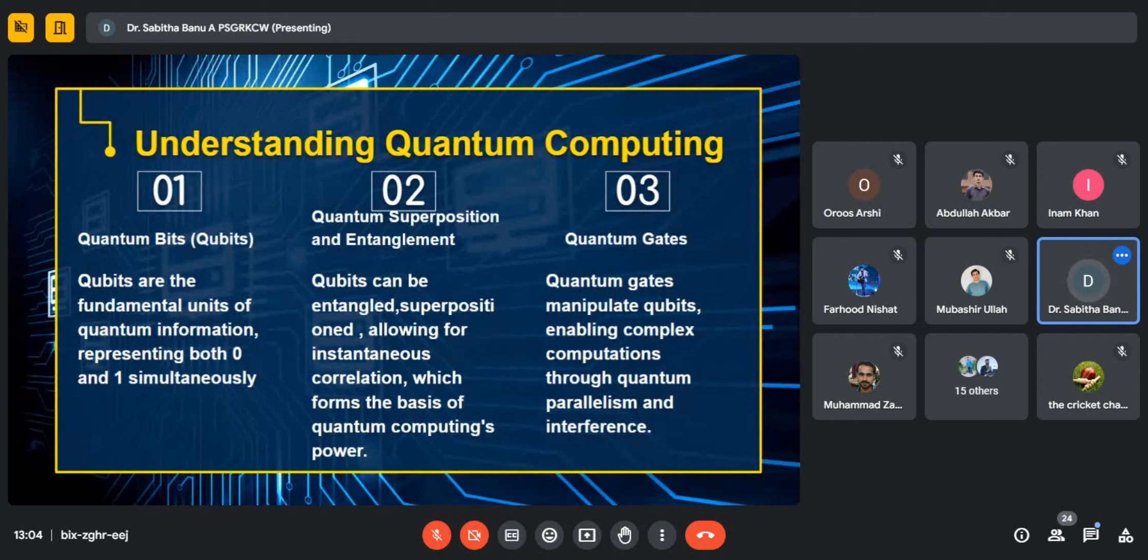In traditional computing it will be zero or one, but in quantum computing it will be zero and one at the same time. We can achieve both states simultaneously, which is the basic advantage of quantum computing to solve many complex problems.